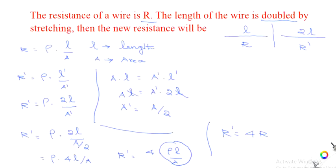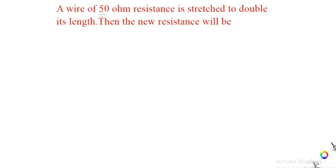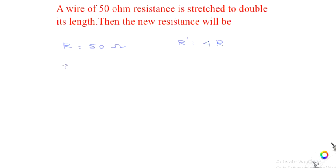Let us see another problem. A wire of 50 ohm resistance is stretched to double its length. Then the new resistance will be? The resistance given is R equal to 50 ohm. From the last problem, we know that when length is doubled, R dash equals 4 times R. Therefore, the new resistance R dash will be 4 into 50, which is 200 ohm.